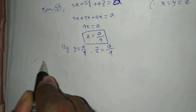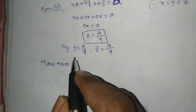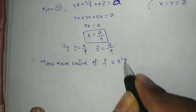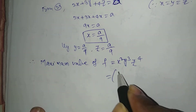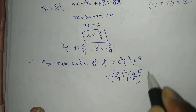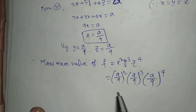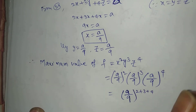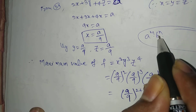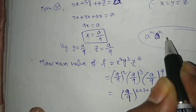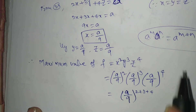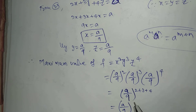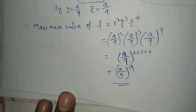Therefore, the maximum value of f equals x squared y cubed z to the power 4, substituting gives (a/9) squared times (a/9) cubed times (a/9) to the power 4. Since the base is the same, we add the powers: 2 plus 3 plus 4 equals 9. Using the formula a to the power m times a to the power n equals a to the power m plus n, the maximum value of f equals (a/9) to the power 9.